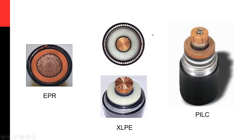Extruded cables are plastic cables and come in two main types: EPR (ethylene propylene rubber) and XLPE (cross-linked polyethylene). To the right you can see PILC cables — paper insulated, lead covered — which is laminated insulation, a completely different type. The PILC is layers of paper impregnated with oil, and fault location on those cables is much different. PILC cables are typically used in downtown networks, while plastic extruded cables are typically used in so-called URD systems and standard distribution systems.